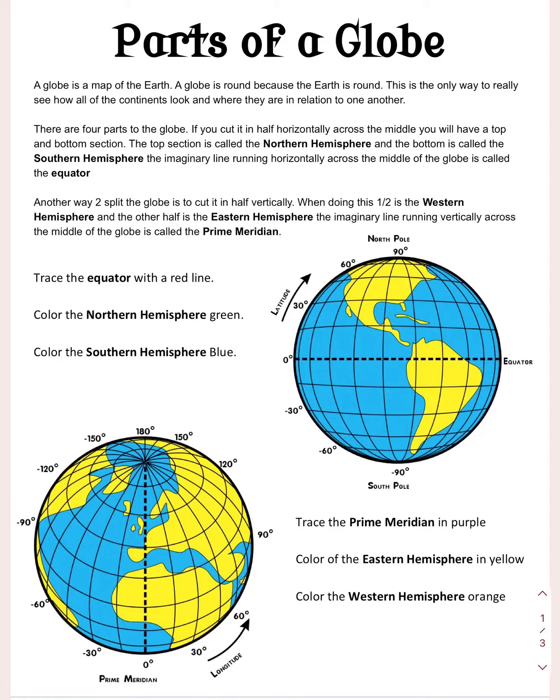Another way to split the globe in two is to cut it in half vertically, top to bottom. When we do that, one half is called the western hemisphere and the other half is called the eastern hemisphere. There's this line that we call the prime meridian that chops the globe in two.